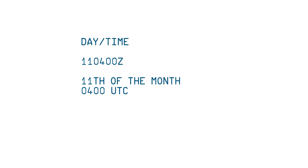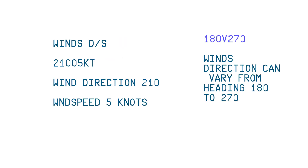Day and time: this means the 11th of the month, 0400 UTC — Universal Time. Wind direction and speed: 210 at 05KT means wind direction is 210 degrees and wind speed is 5 knots. 180V270 means wind direction can vary from 180 to 270 degrees.